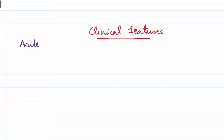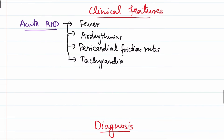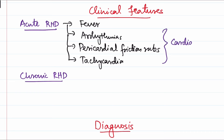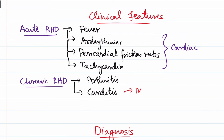Regarding clinical features, acute rheumatic fever and acute rheumatic heart disease usually present with fever, arrhythmias, pericardial friction rub (because of fibrinous pericarditis), and tachycardia. In acute RHD, cardiac manifestations are more prominent. In chronic RHD, the most common manifestation is arthritis, followed by carditis and features of mitral stenosis.